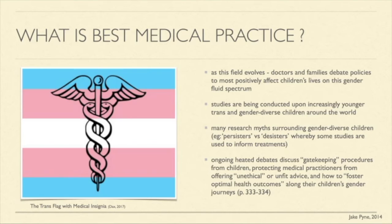As for the best medical practice for these children — this is an evolving field where doctors and families are debating policies to most positively affect children's lives, with studies being conducted on increasingly younger children worldwide. Many research myths surround gender diverse children, tied to some researcher bias, and they call them persisters versus desisters — which I think is archaic, as it suggests some children grow out of this. There is an ongoing heated debate discussing gatekeeping procedures, protecting medical practitioners from offering unethical advice, and how to foster optimal health outcomes.